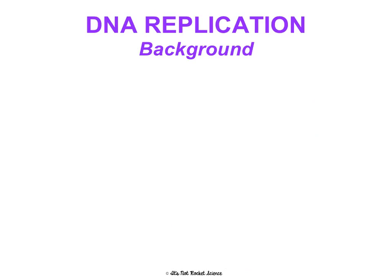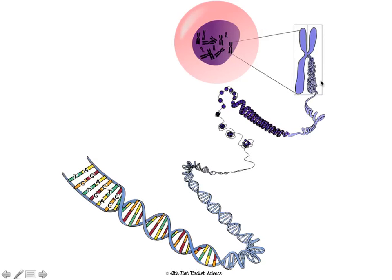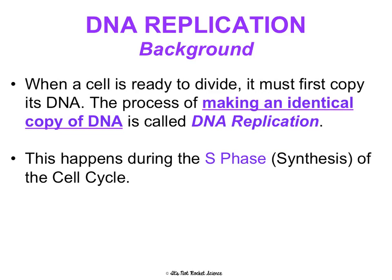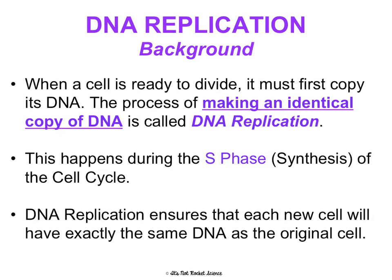Now we're going to talk about DNA replication — how we get two identical sister chromatids in the S phase of interphase. When a cell is ready to divide, it first must copy its DNA. The process of making an identical copy of DNA is called DNA replication, and it happens during the S phase, or synthesis phase, of the cell cycle during interphase. This ensures that each new cell is going to have the exact same DNA as the original cell — so the daughter cells have the same DNA.